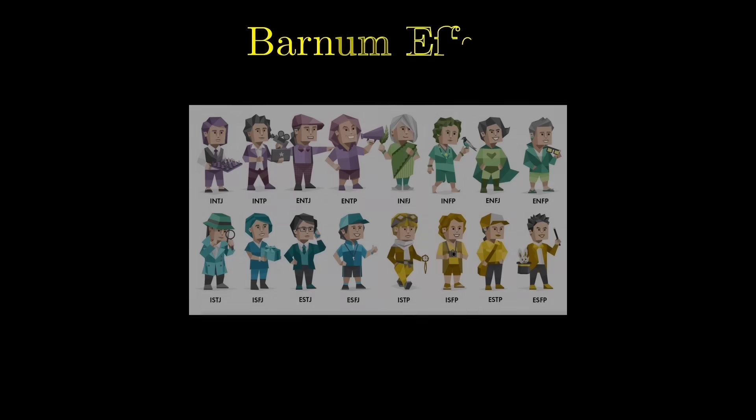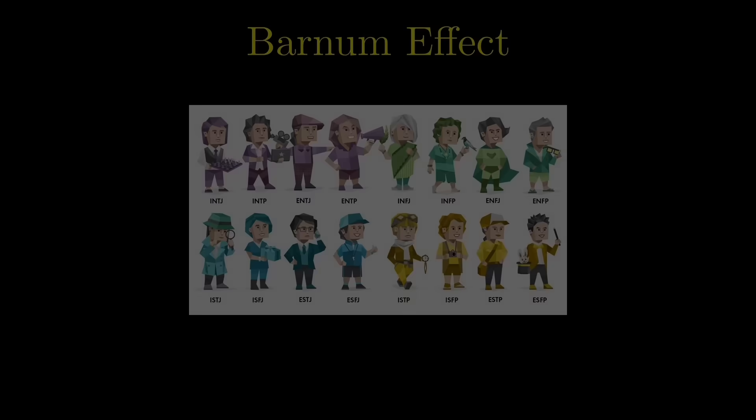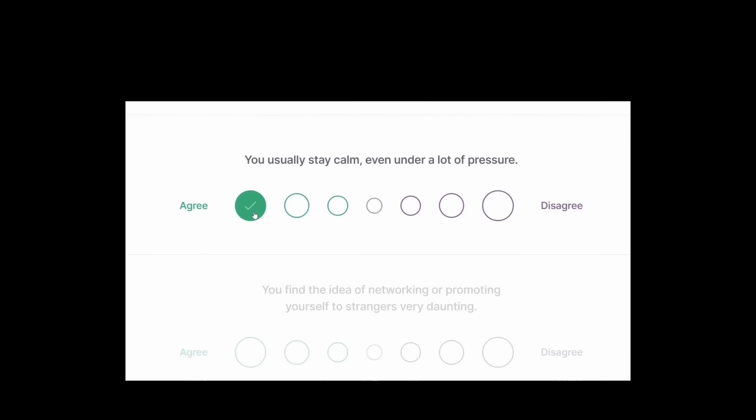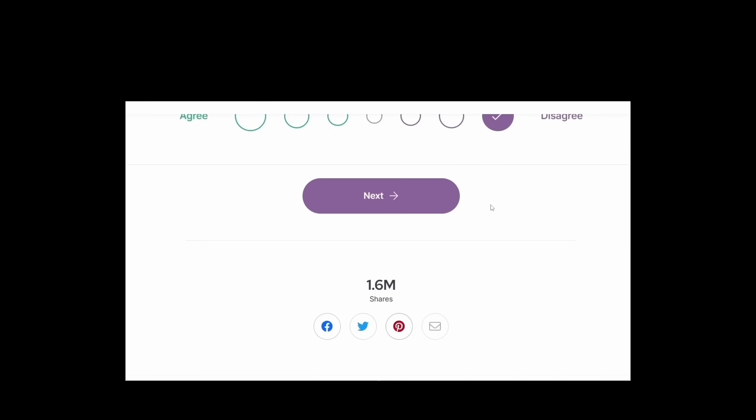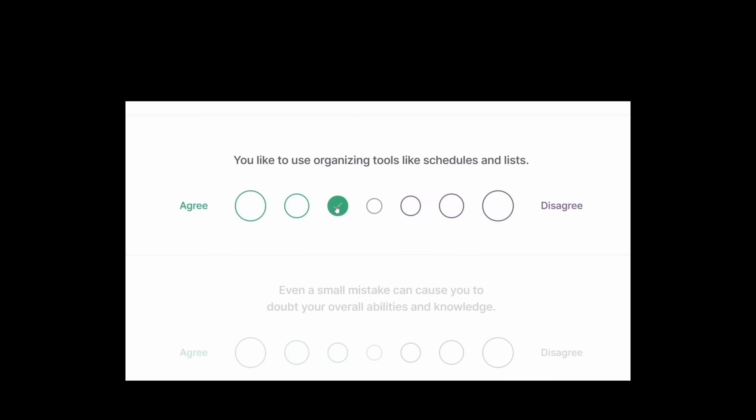In our daily lives, we can find many examples of the human brain overfitting. One example is the Barnum effect. Have you heard of the MBTI personality test? This test, which categorizes individuals into one of 16 personality types based on their responses, often provides generic descriptions that many people feel apply specifically to them.